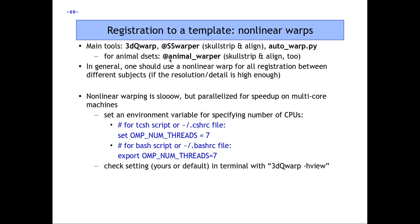The equivalent for animal studies is called @Animal_Warper. It also performs skull stripping and alignment simultaneously. When analyzing animal datasets, most aspects of your analysis are similar, but there are important differences such as the overall size and scale of the brain and features, and possibly different contrasts. This script has fairly similar input/output to @SS_warper, and it can also be integrated with afni_proc.